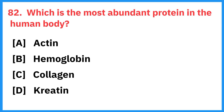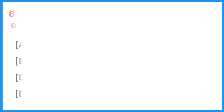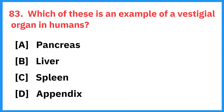Which is the most abundant protein in the human body? Right answer is collagen. Which of these is an example of a vestigial organ in humans? Right answer is appendix.